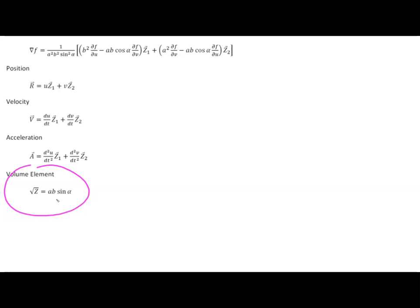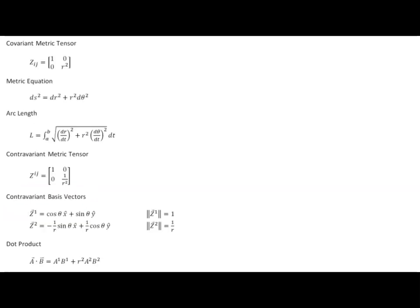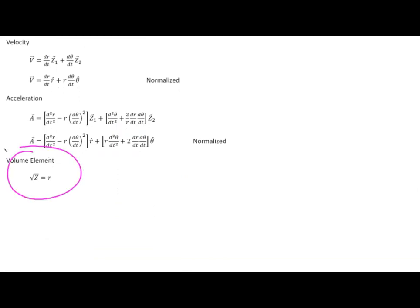Moving on now to plane polar coordinates. This time we're back to a matrix that has only diagonal elements, so we simply multiply the diagonal elements together. Our determinant value is going to be 1 times r squared, or just r squared. And obviously the volume element, the square root of z, is equal to r. The volume element for plane polar coordinates is simply r.